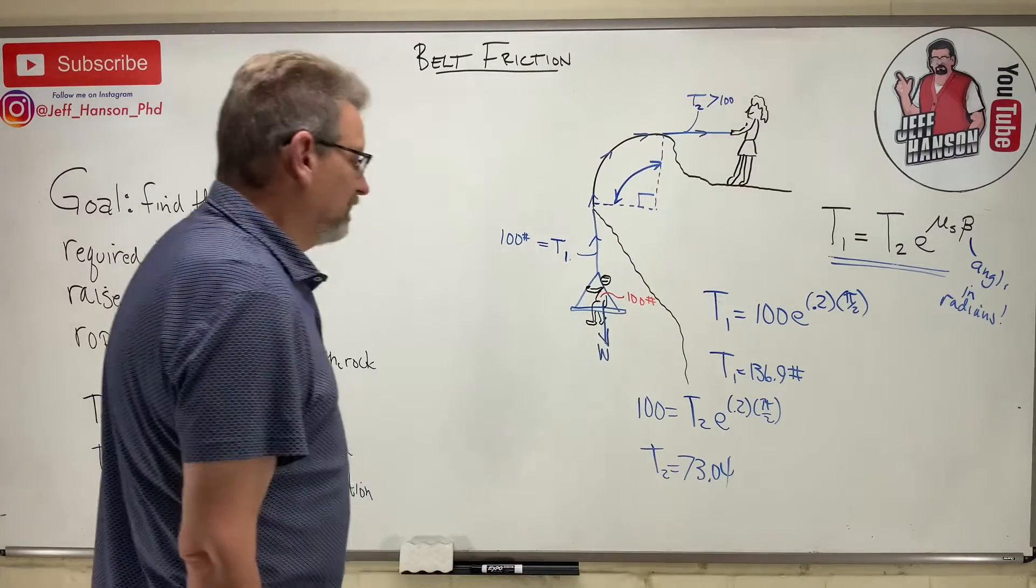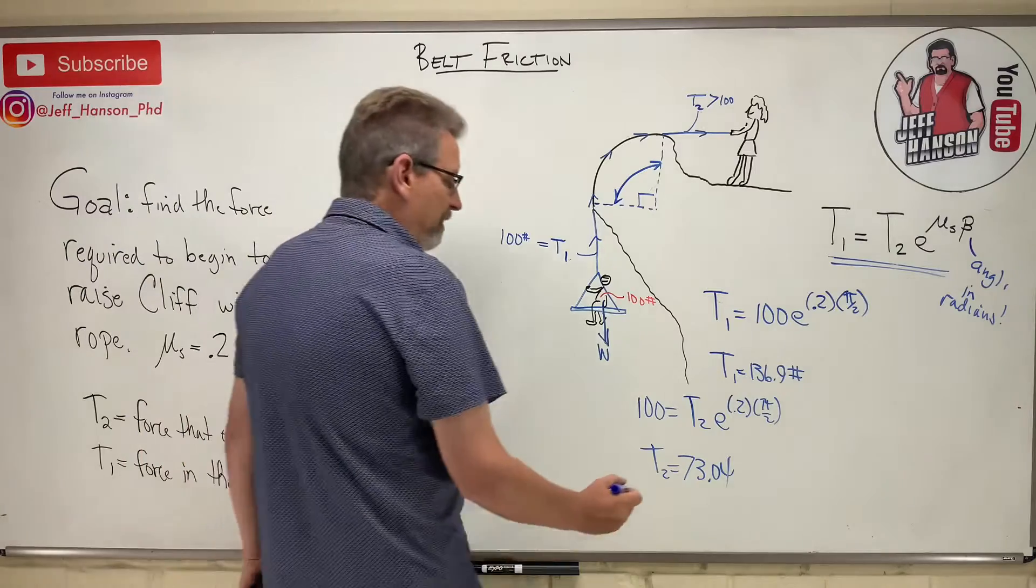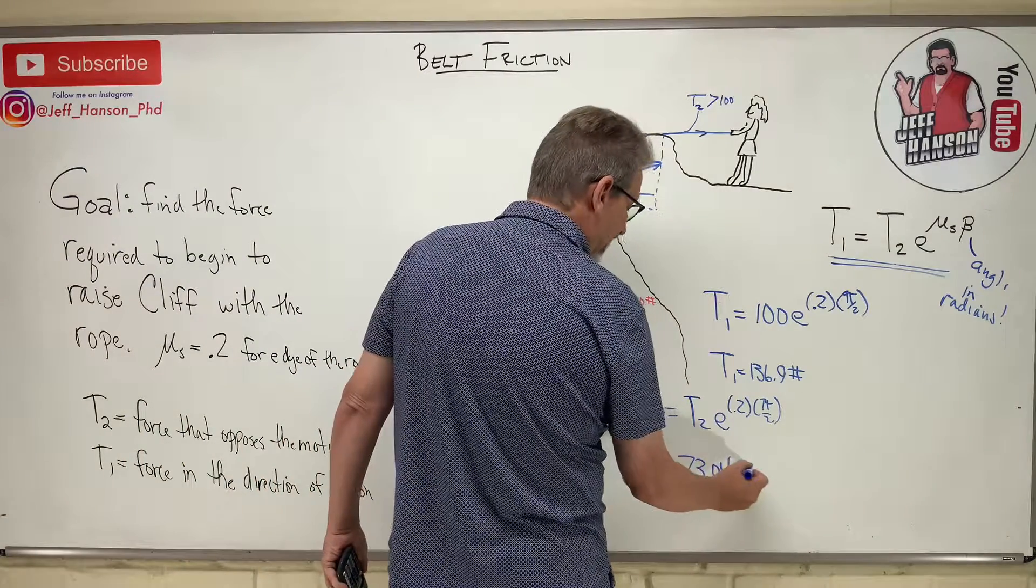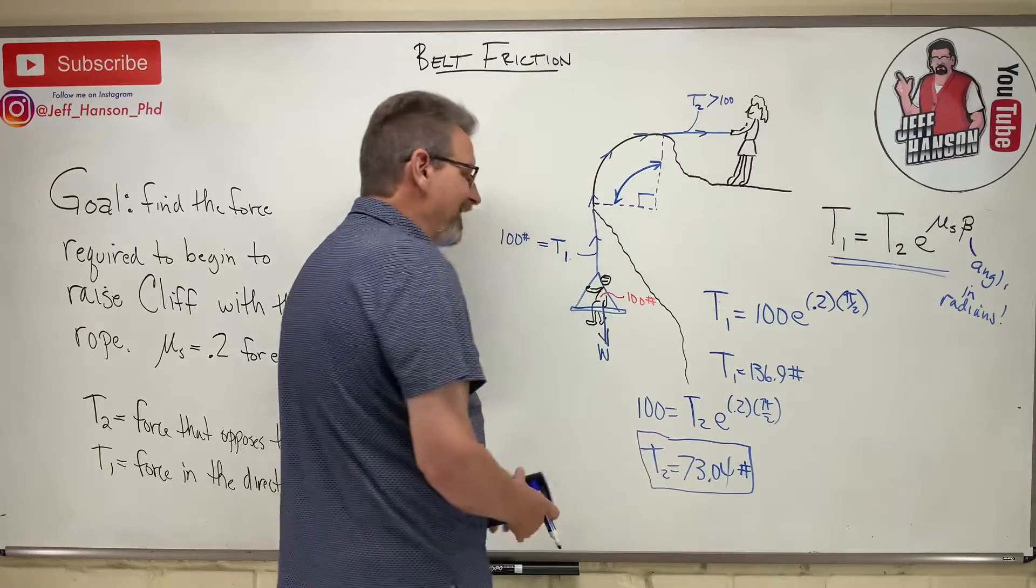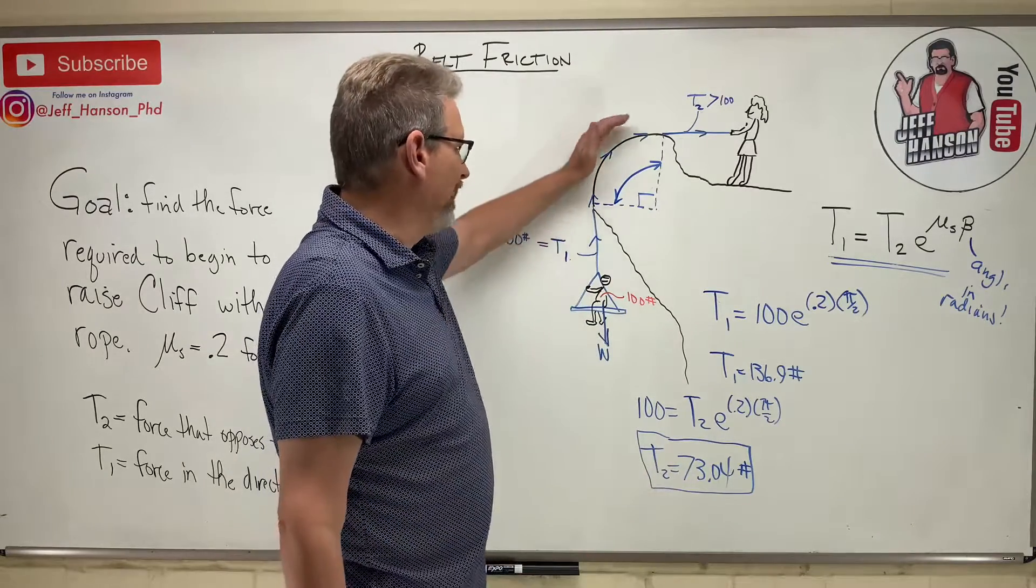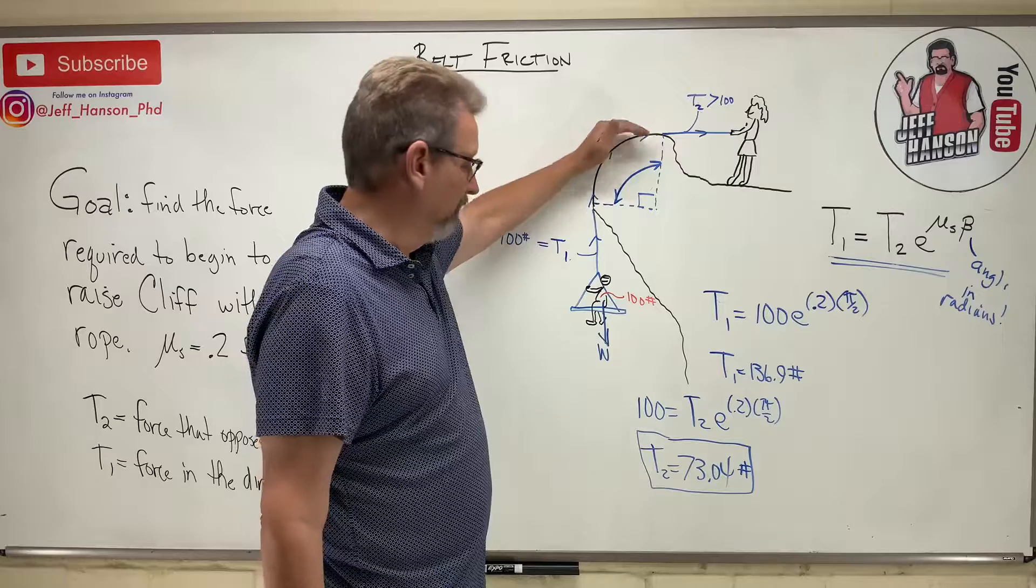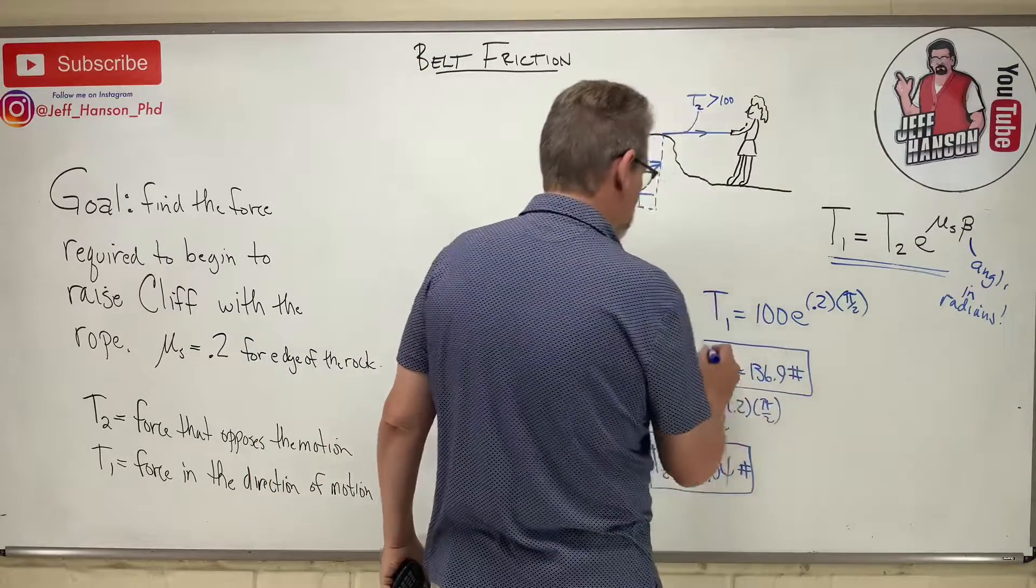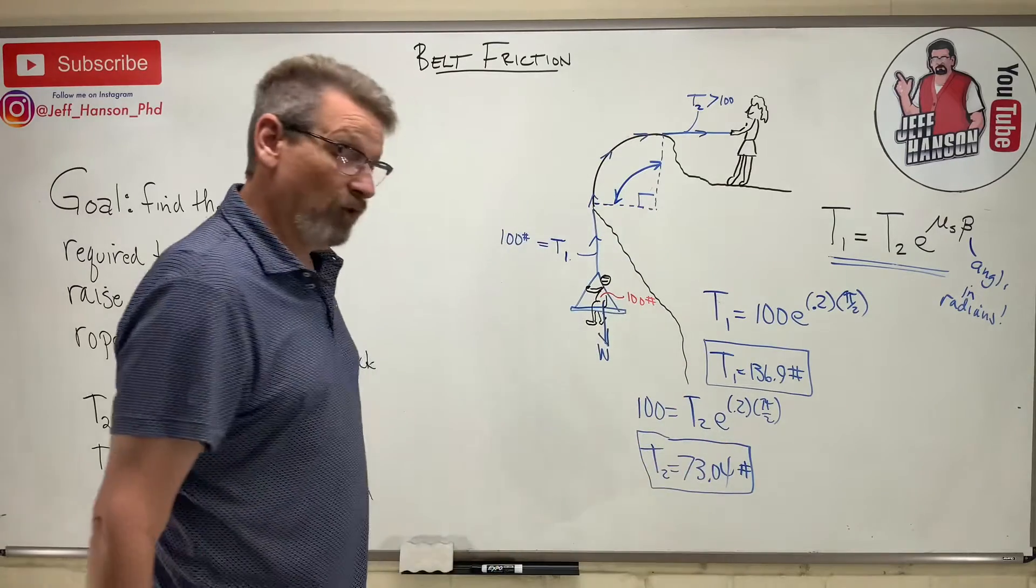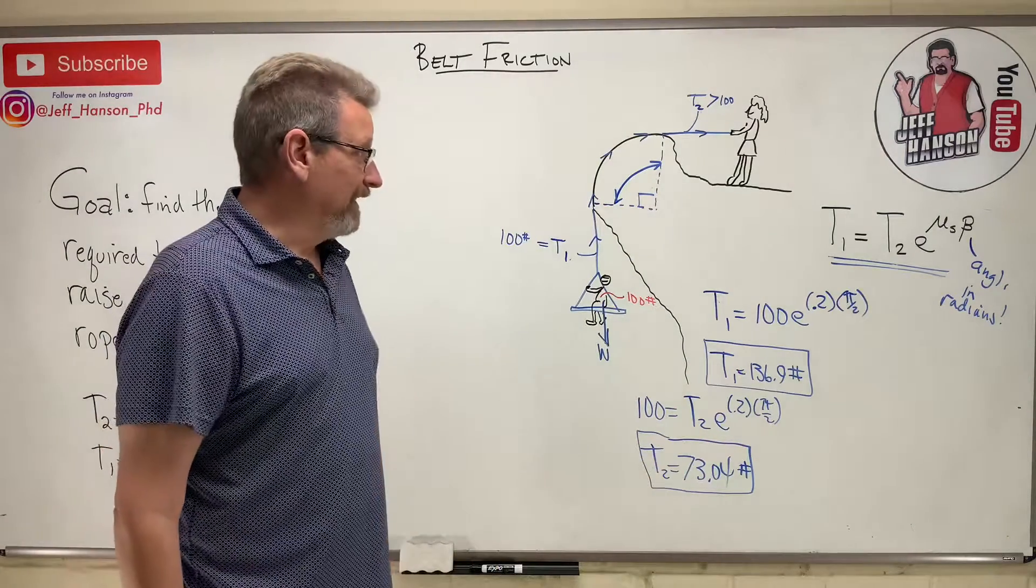So there you go. In that case Esmeralda, to keep him in equilibrium, to keep him from falling down, just to hold him in place, has to hold less than his weight. Why is that? Because some of his weight is supported by this friction up here. So she's got to pull 136.9 to raise him or 73.04 pounds to keep him in equilibrium.